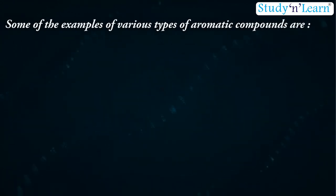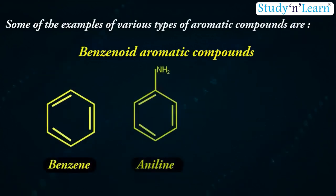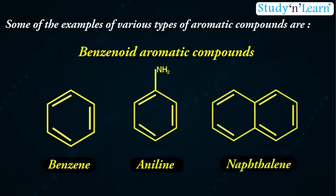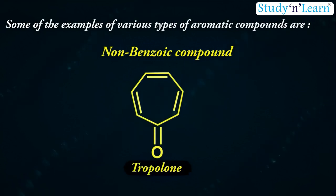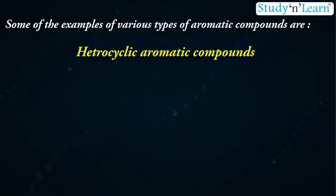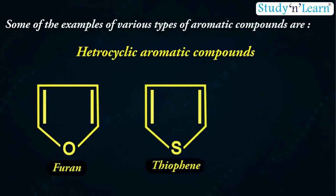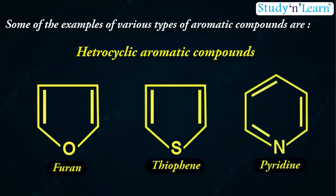Some examples of various types of aromatic compounds are: Benzoid aromatic compounds like benzene, aniline and naphthalene. Other examples are non-benzoic compounds like tropolone and heterocyclic aromatic compounds like furan, thiophene and pyridine. Here you can clearly see that these compounds also contain atoms other than carbon and hydrogen. As in case of furan, you have oxygen atom in addition to hydrogen and carbon.